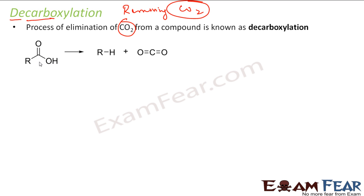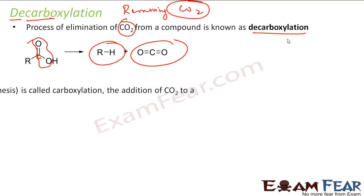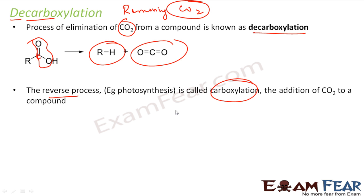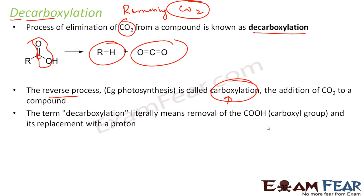So if you see, R-COOH is my compound here. From this, if I remove carbon dioxide, you get R-H and CO2. This process is called decarboxylation because you are removing carbon dioxide from it. And the reverse process of adding carbon dioxide is called carboxylation. In the chemistry world, decarboxylation means removal of the COOH group and replacing it with H — that means you are removing only CO2, that is carbon dioxide.